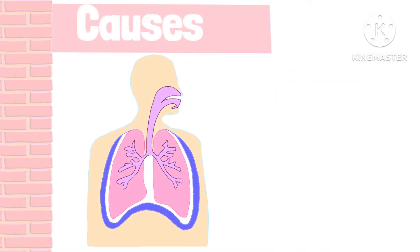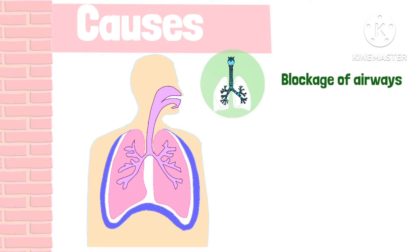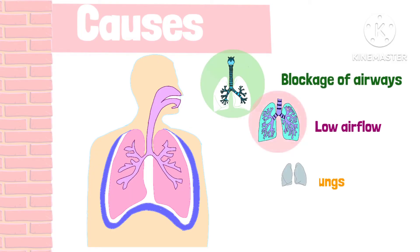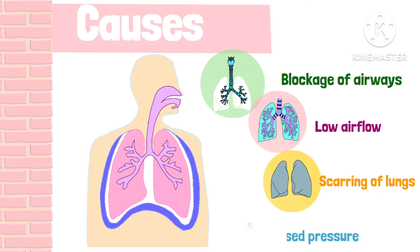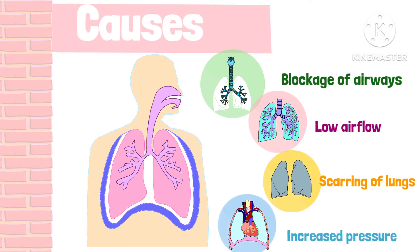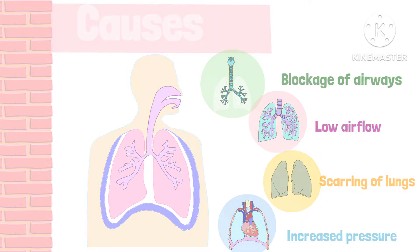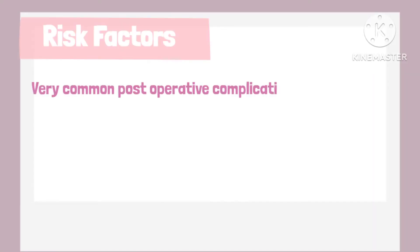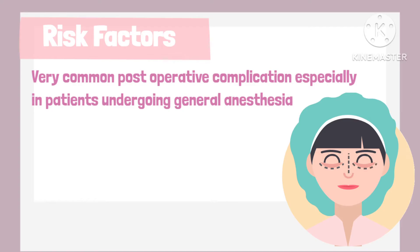Some of the commonest causes of atelectasis include blockage of the airways, low air flow, scarring of lungs, and increased pressure outside the lungs — all of which cause the alveoli to shut close. Atelectasis is a very common post-operative complication of major surgeries, especially those involving general anaesthesia.